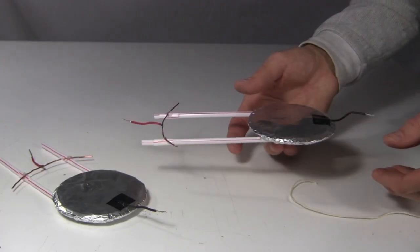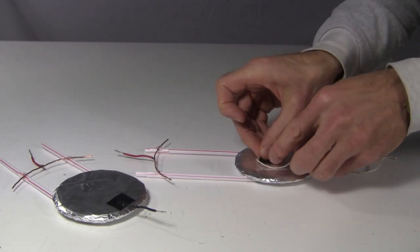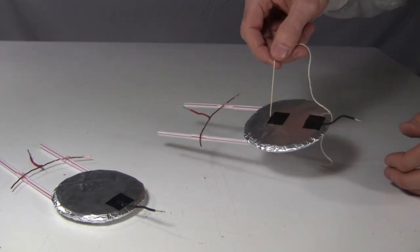And lastly I roughly find the center of gravity of the ionocraft and tape some string to the top, around that center of gravity.